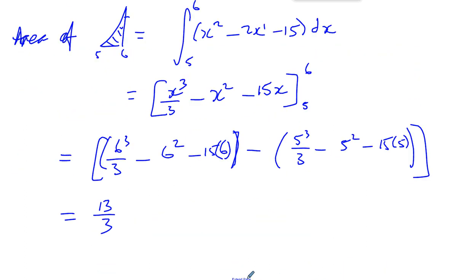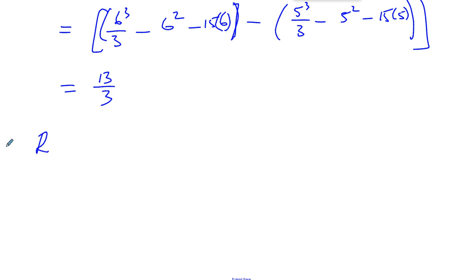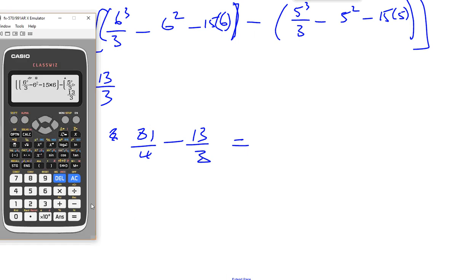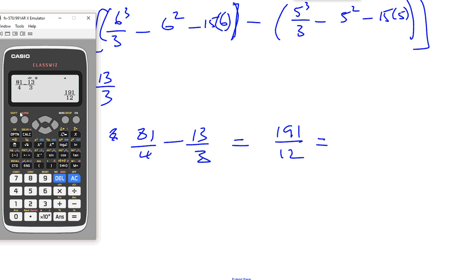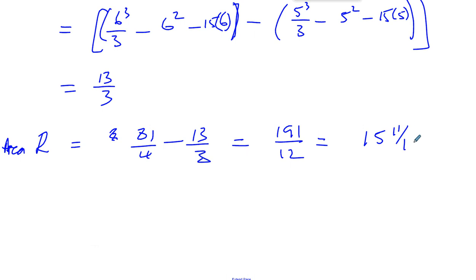We have 81/4, so the required area, the area of R, is going to be 81/4 - 13/3. So 81/4 - 13/3, which will give us 191/12. If you want, you can leave it like that. That's perfectly acceptable. If you want to express it as a mixed number, you can do so: 15 and 11/12. Both of them are acceptable. So there we have it. That's how you find the area of R in this question.